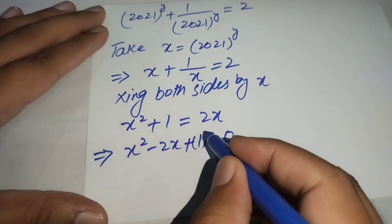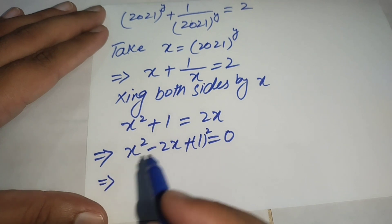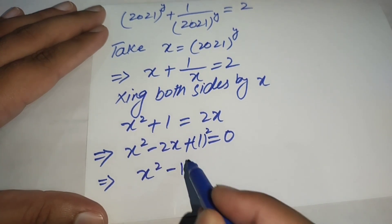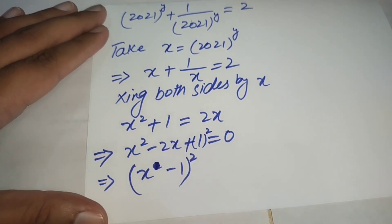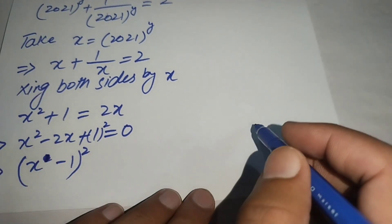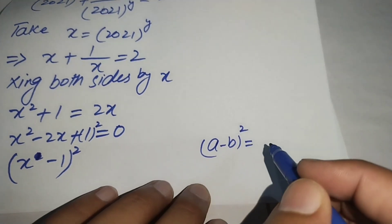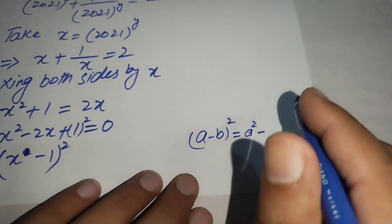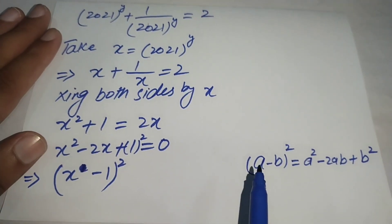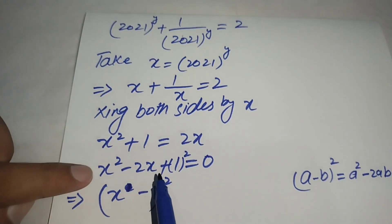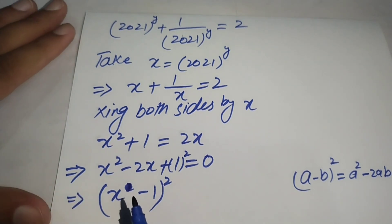We recognize that 1 can be written as 1^2, so the expression becomes (x - 1)^2 = 0. This uses the famous identity: (a - b)^2 = a^2 - 2ab + b^2.